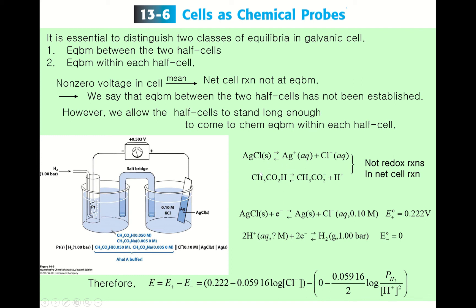On the right-hand side, silver chloride undergoes reduction: AgCl accepts one electron to become silver metal and chloride ion. The standard reduction potential for this reaction is 0.222 volts. On the left-hand side, acetic acid dissociates into acetate and a proton.